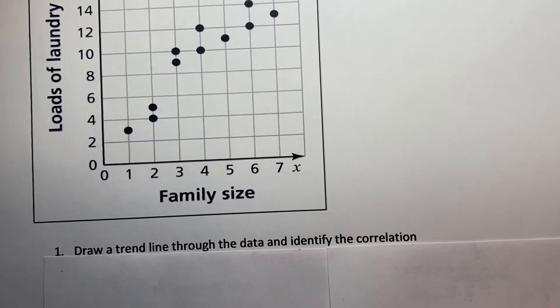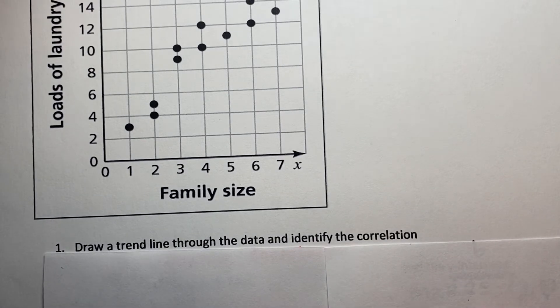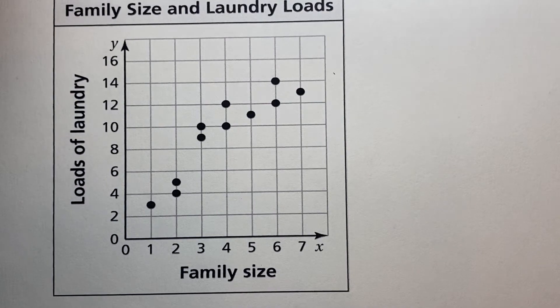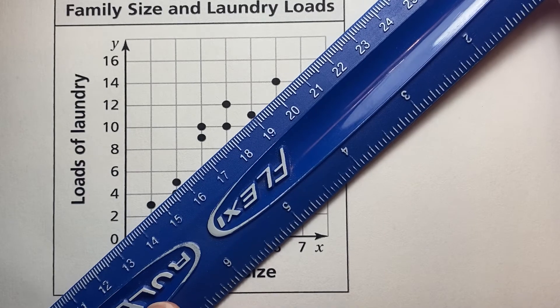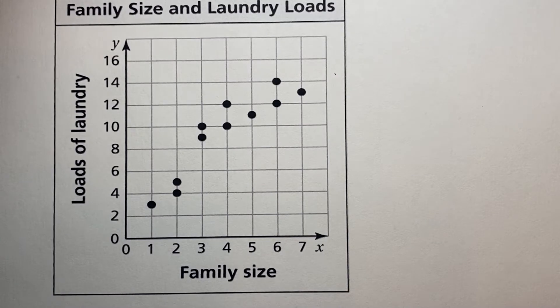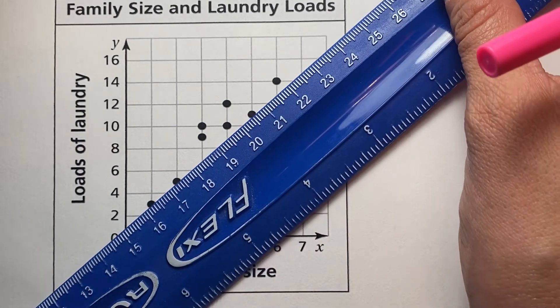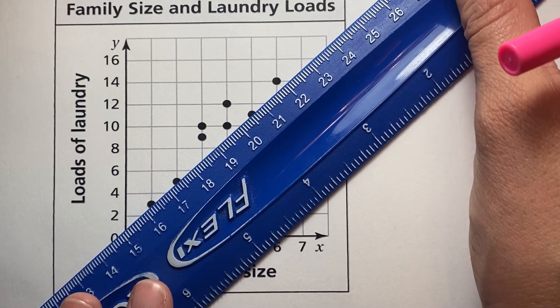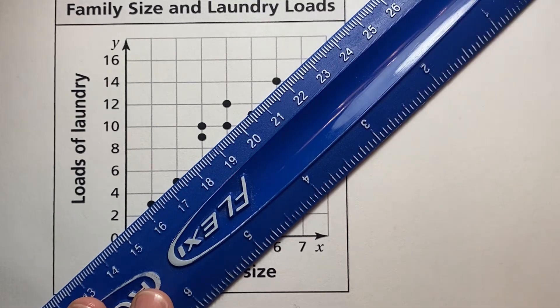So directions for number one say to draw a trend line through the data and identify the correlation. Well, we were able to identify the correlation just by looking at our data. So when we draw our trend line, you want to make sure that you are putting that line with enough data above and below. So if I take a look here, it may be a little difficult virtually, but on your slides, you are going to have the ability to adjust your line. So when I look here, this is probably going to be the best fit here.